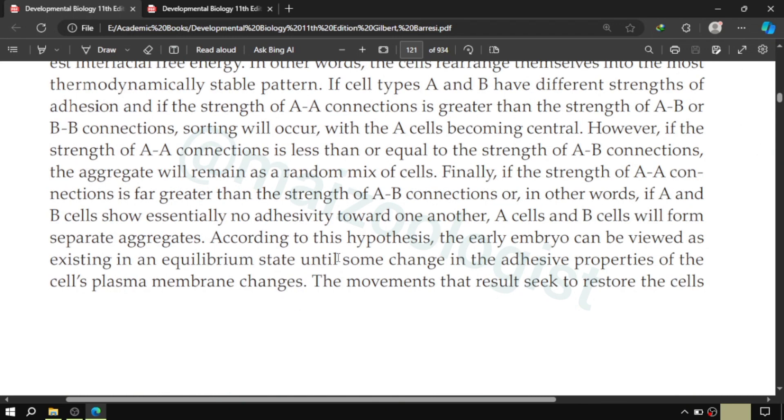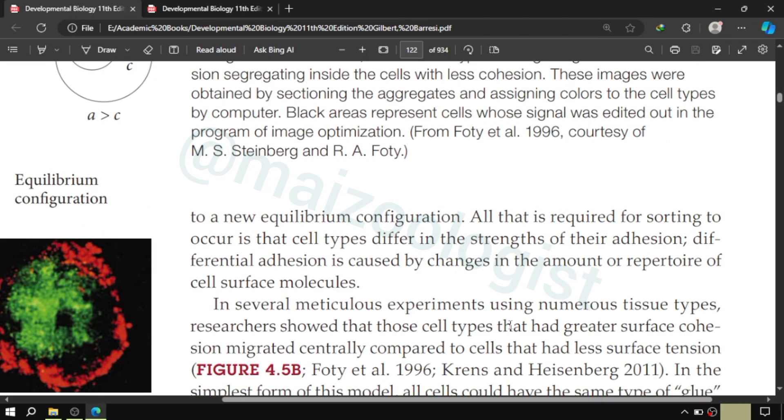And according to this hypothesis, the early embryo can be viewed as existing in equilibrium state until some change in adhesive properties of cells plasma membrane change. Earlier, there is kind of aggregate of cells and that aggregate of cell is in some kind of equilibrium state. And then some changes occur in the adhesive properties of cell plasma membrane, and those changes cause all those movements. The movements that result seek to restore that thermodynamically most stable position, or we can say they seek a new equilibrium configuration.